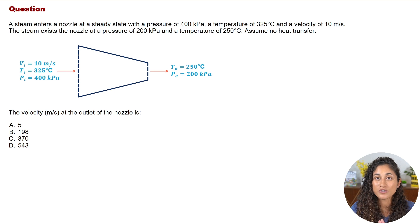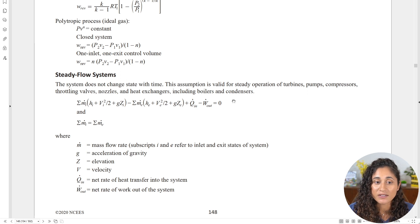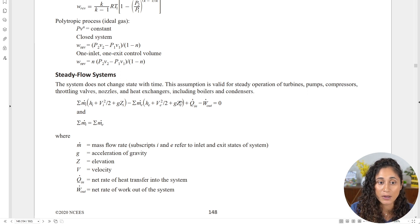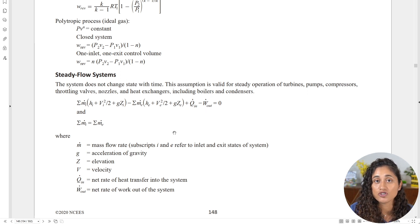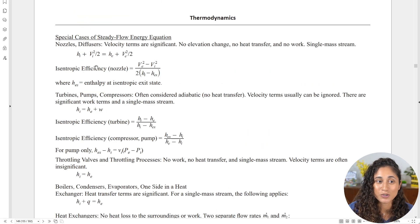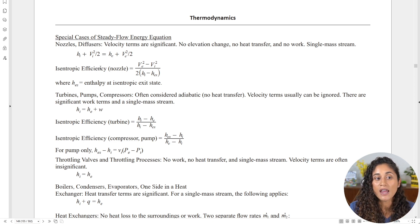To solve this problem, we go to the reference manual and look at the energy balance equation for steady flow systems, which we can use for nozzles, pumps, compressors, and so on. Since there's no heat transfer, that term goes to zero. No work is being done, so that term goes to zero. And no change in elevation or potential energy, so those terms go to zero as well. The equation simplifies to the form we use for nozzles and diffusers when all these assumptions apply.